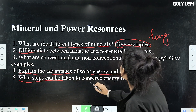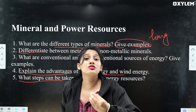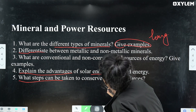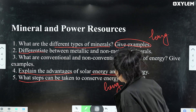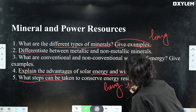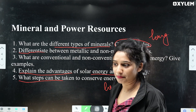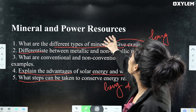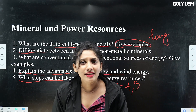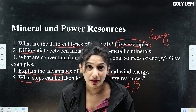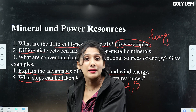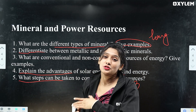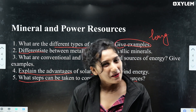Last question: what steps can be taken to conserve energy resources? This is a long answer type question — expect it for four marks or three marks. This concludes our third chapter on Minerals and Power Resources. We discussed important questions covering geography, politics, history, and economics. In this video, we discussed all the important things in these chapters. Bye!